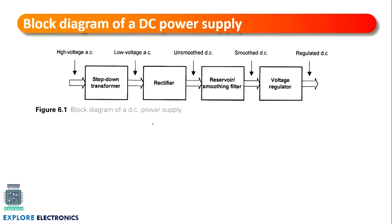The block diagram of DC power supply is as shown in the figure. A high voltage AC is given as input and finally we get a regulated DC output. Once we give the AC voltage to the step-down transformer, we get a low voltage AC as output, which is then input to the rectifier. The rectifier converts the AC signal into DC, but the output will be an unsmoothed DC signal. To smooth that signal we need a smoothing filter and reservoir circuit, and the output of that — smoothed DC — is given to the regulator to get the regulated DC output.